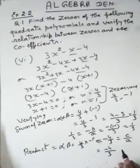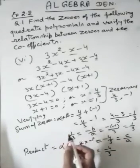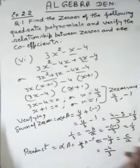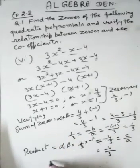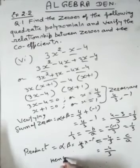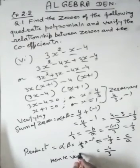The product of zeros is also verified. Both the sum and product are verified — hence verified.